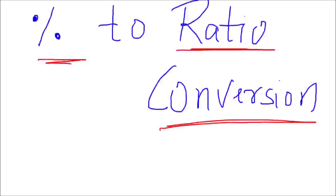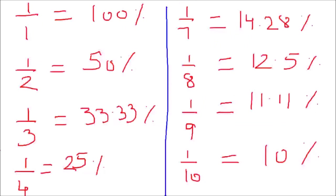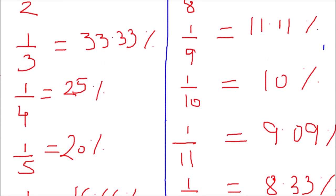Before moving to examples, I would really suggest you learn some terms. I've written down 12 standard ratio-to-percent conversions which I assume you should know. Six of these you already know: 1/1 is 100%, 1/2 is 50%, 1/3 is 33.3%, 1/4 is 25%, 1/5 is 20%.